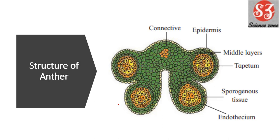Chapter 1, the first important diagram is the structure of anther. So the structure of anther — or 'explain the structure of anther' — you can give them the explanation plus diagram. So the question is the structure of anther.